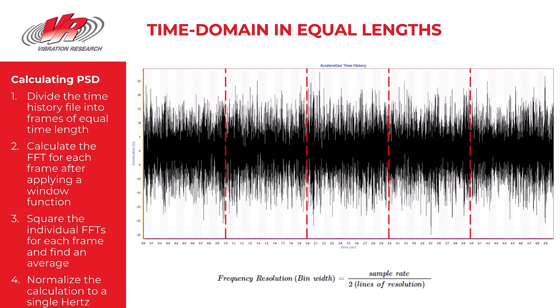The calculation to convert the time domain data into the PSD plot is a bit of a complex concept, but can be summarized generally with four steps. First, divide the time history file into frames of equal length time. That concept particularly is what we want to focus on today, as it relates to the lines of resolution.